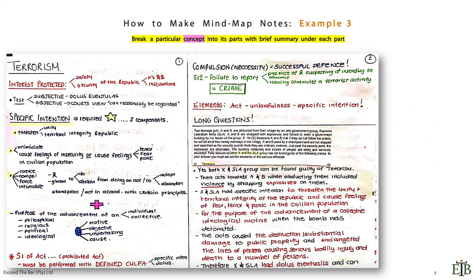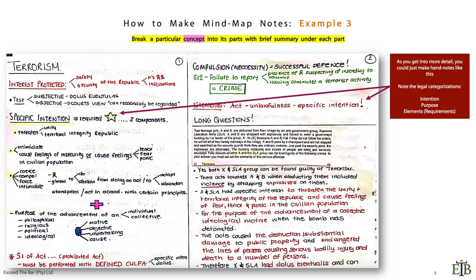Here's a third example. Break a particular concept into its parts with a brief summary under each part. This is for those who like writing things. This particular mind map came from the study of criminal law, where we dealt with matters such as terrorism and comparing that to compulsion or necessity as a successful defense. As you get into more detail, you could just make hand notes like this. Look how she's gone and abbreviated again. Specific intention is required, it's very important, it's got a star.